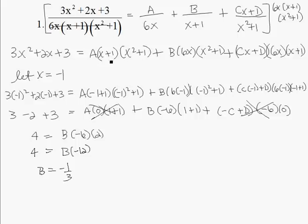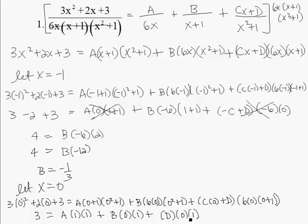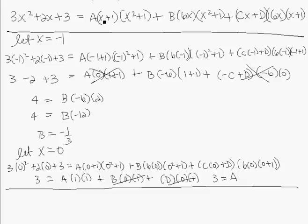Now let x equal 0, because 6 times 0 makes the A term's denominator zero, wiping out the B and Cx plus D terms as well. Plugging in 0, the left side gives 3. On the right we get A times 1 times 1, and all other terms vanish. So 3 equals A, meaning A is equal to 3.